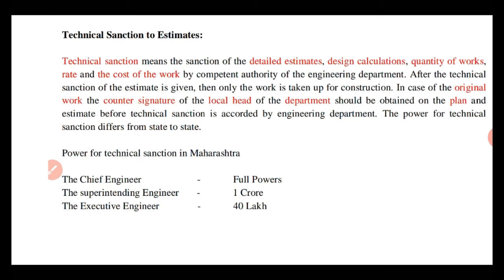Chief engineer के अंडर superintendent engineer काम करते हैं। Superintendent engineer के पास technical sanction करने का power near about एक करोड़ तक का रहता है। Similarly, for the executive engineer, the power of technical sanction is up to 40 lakh।